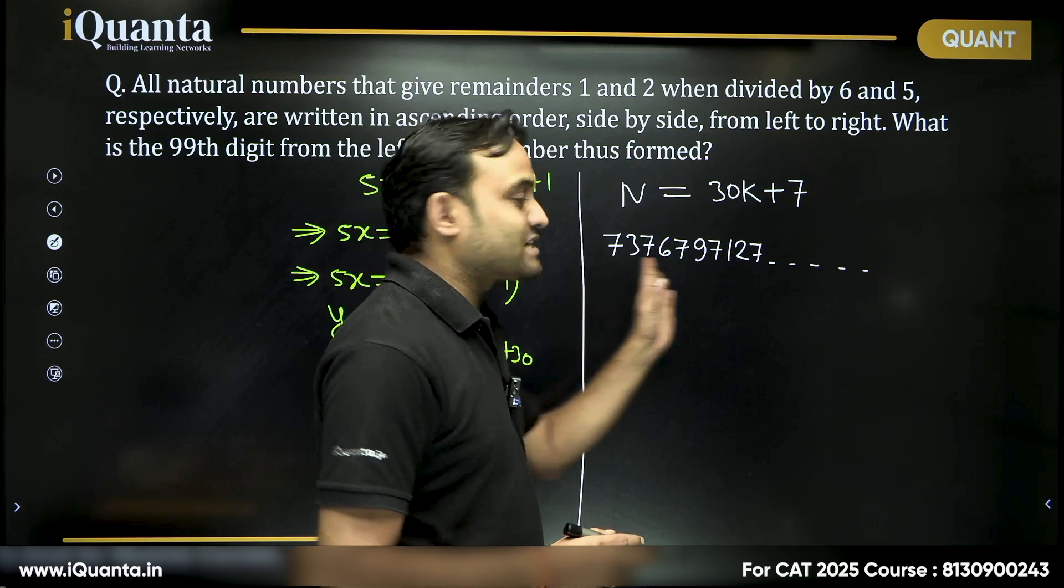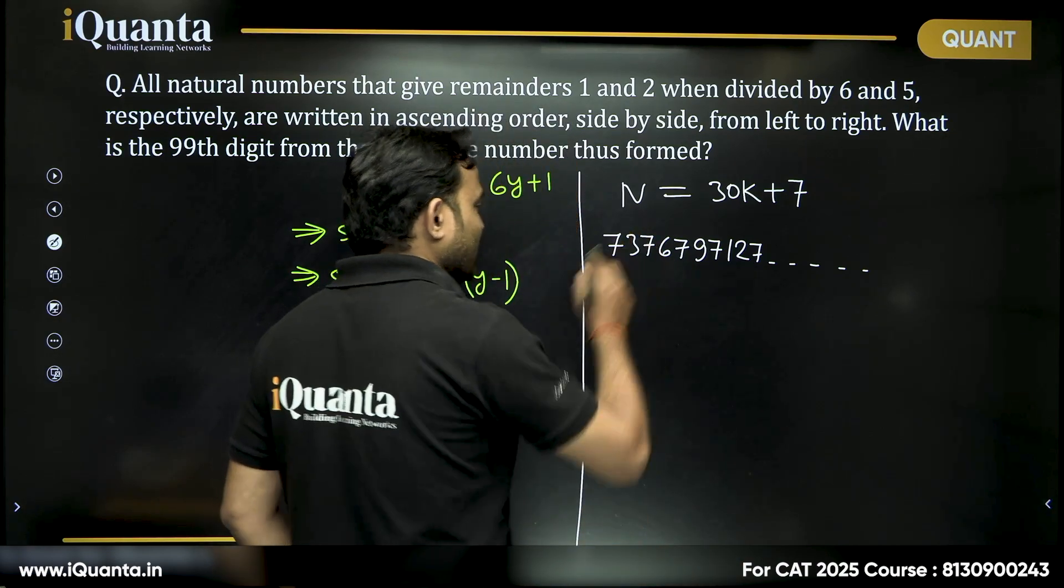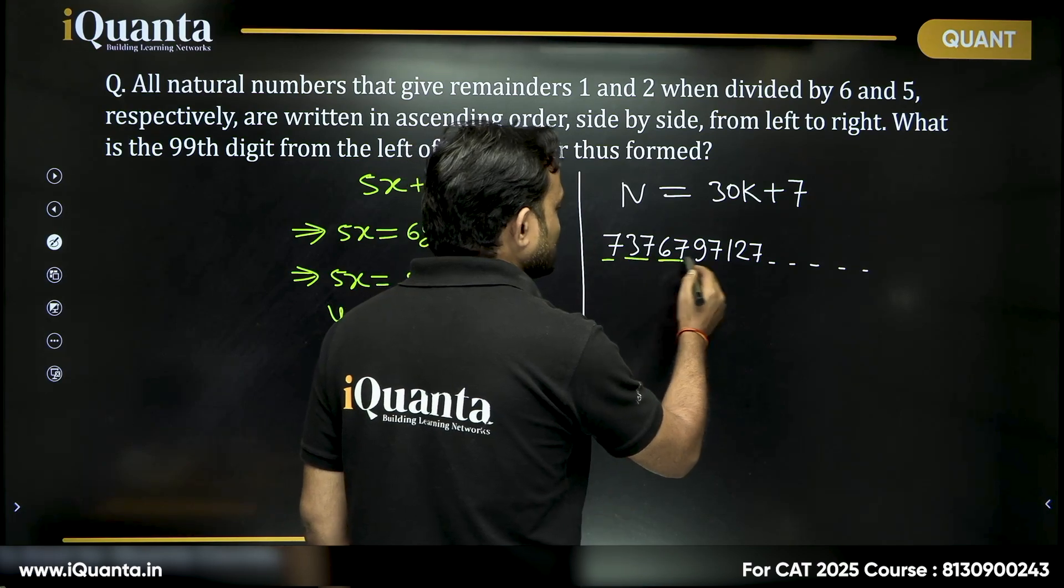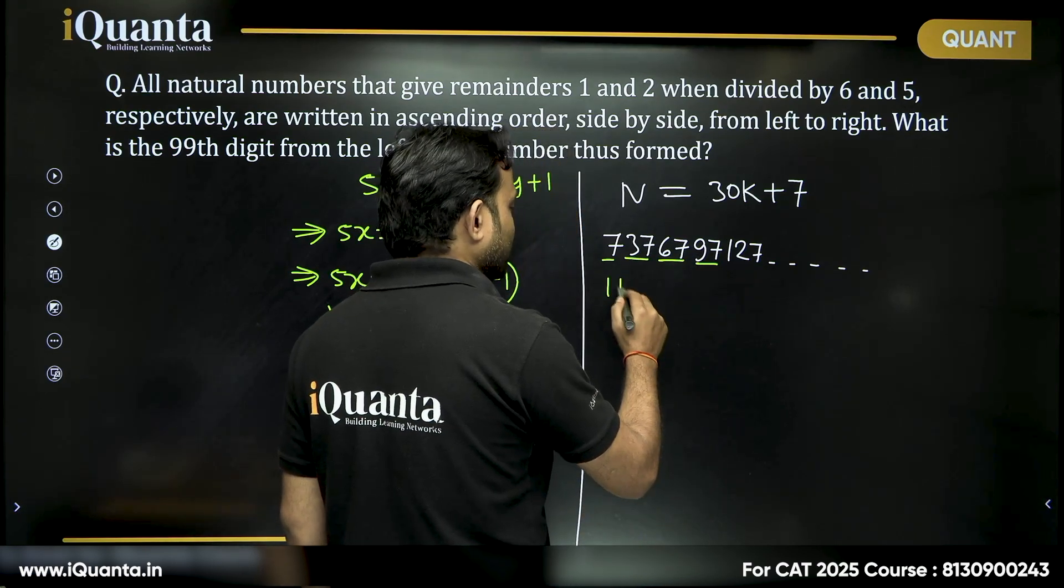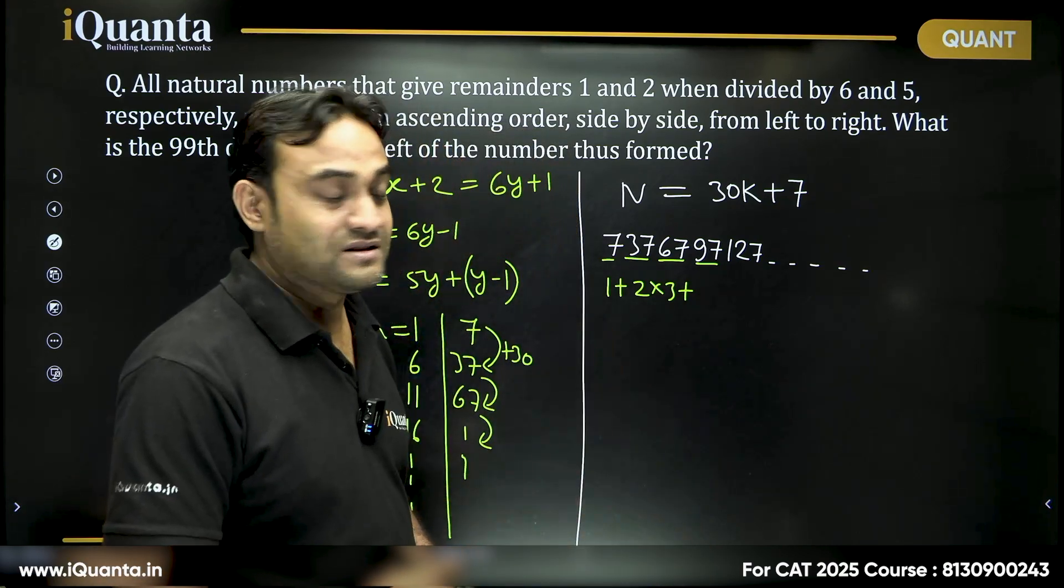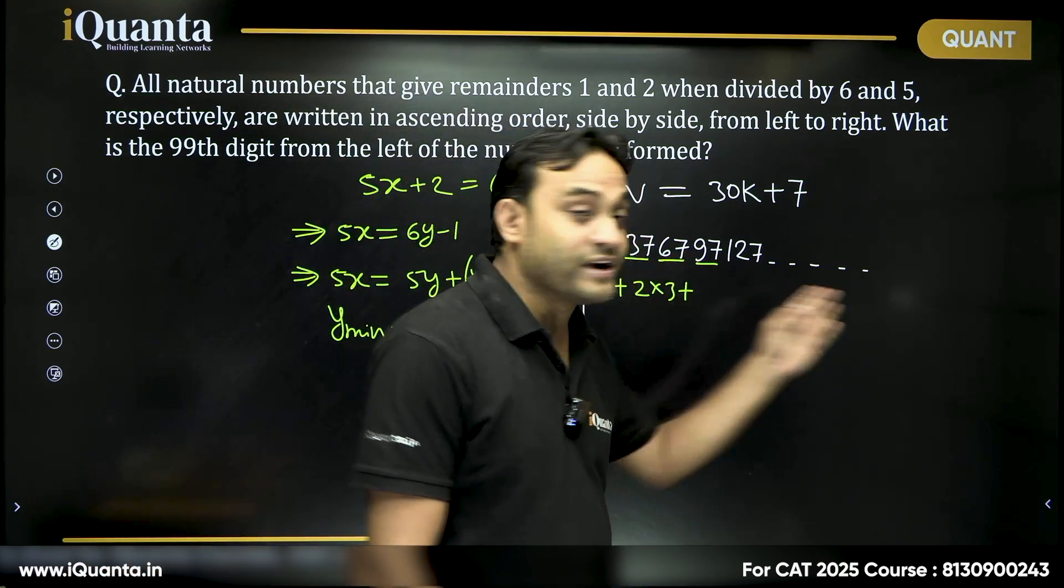So how many two-digit numbers will be there? Can I say single digit number is 1, two-digit numbers are 1, 2, 3. So 1 plus 2 times 3, we already got 7 digits.